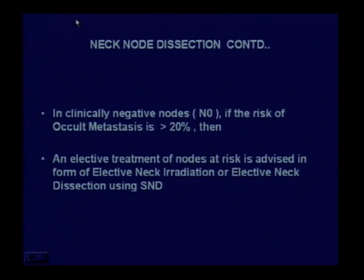Another important aspect is that in clinically negative nodes — N0 — if the risk of occult metastasis is more than 20 percent, elective treatment of nodes at risk is advised. Elective treatment can be either elective neck irradiation or elective neck dissection using selective node dissection techniques.